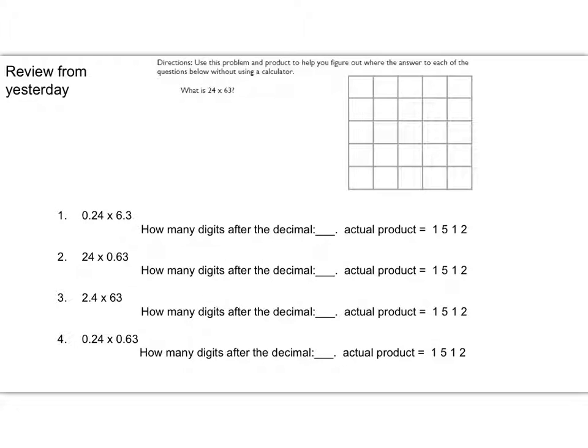We're going to start off with the problem 24 times 63. We're going to find out what the full digits for that answer is. I'm going to have 24 and 63. It doesn't really matter what order because they're both the same length. And let's do that multiplication.